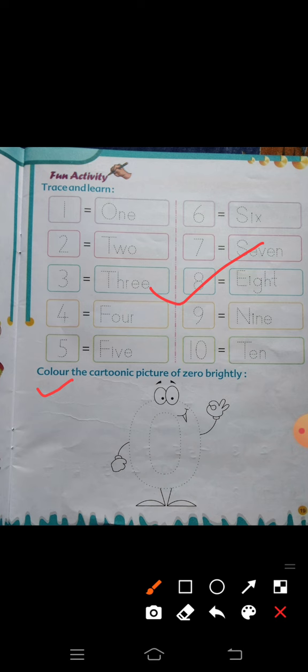है color the cartoon picture of zero brightly. यह आप देखें कार्टून वाली picture बनी हुई zero है ना बीच में बड़ा। उसके eyes भी है, lips भी है, hands भी है, legs भी है। तो यह हम बहुत ही